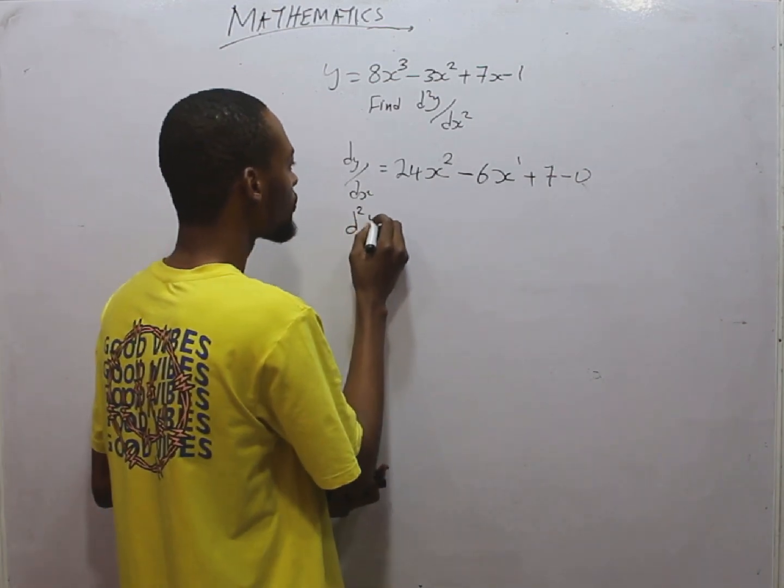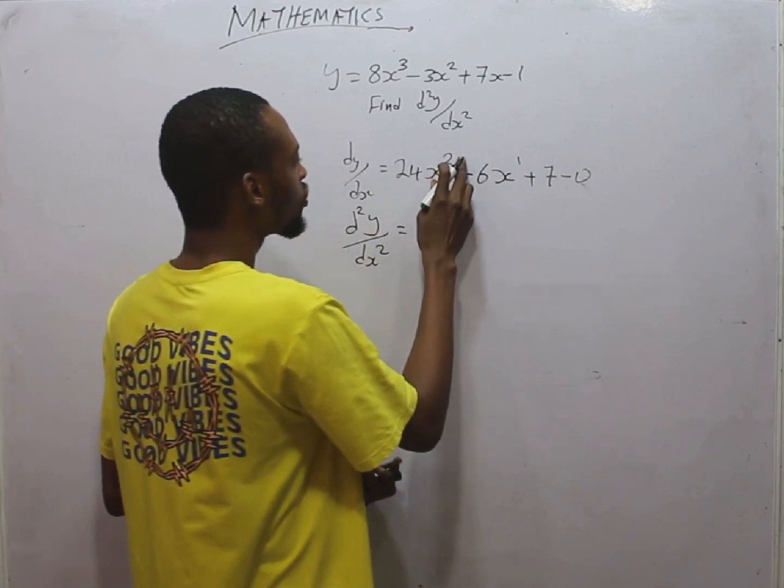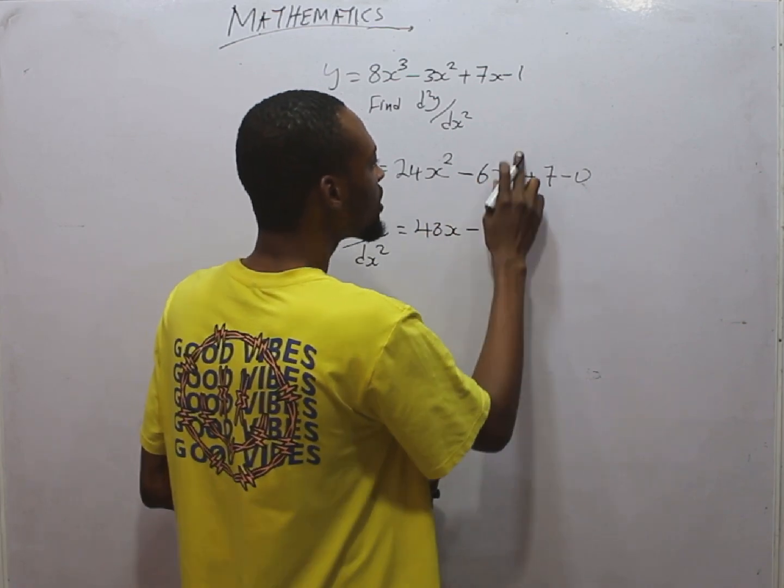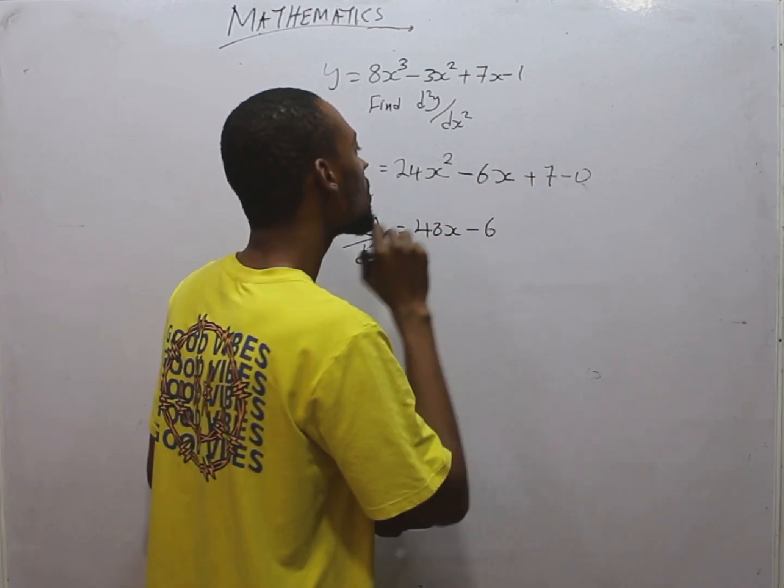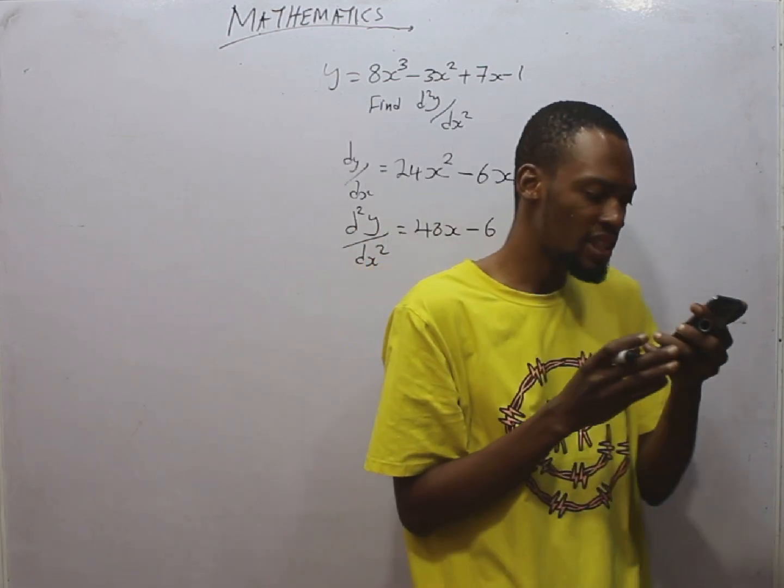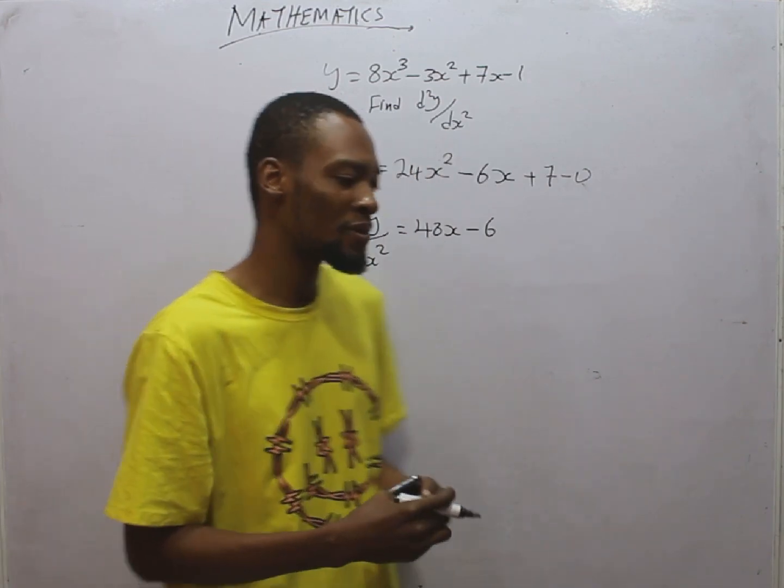Differentiate the second time, d squared Y over dS squared. You simply have 2 times 24, that is 48S minus. When you differentiate 6S you get 6, and when you differentiate constant you get 0. Let's see if there is something like this in the option. 48S minus 6. So option D is the correct option.